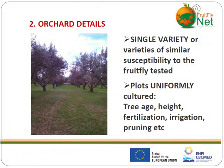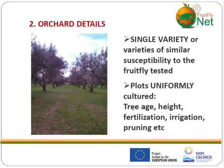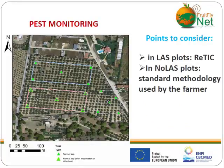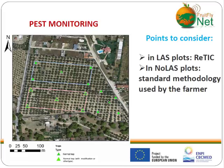All orchards were cultivated with a single uniform variety across the entire plot. Tree age, height, fertilization, irrigation, and pruning methodologies were identical across all plots. Pest monitoring was based on yellow sticky traps baited with ammonium bicarbonate. In the LAS plot, 5 E-traps (marked with green triangles) were established. In Plot B, 5 conventional sticky traps without cameras were used. The control plot followed the same methodology.